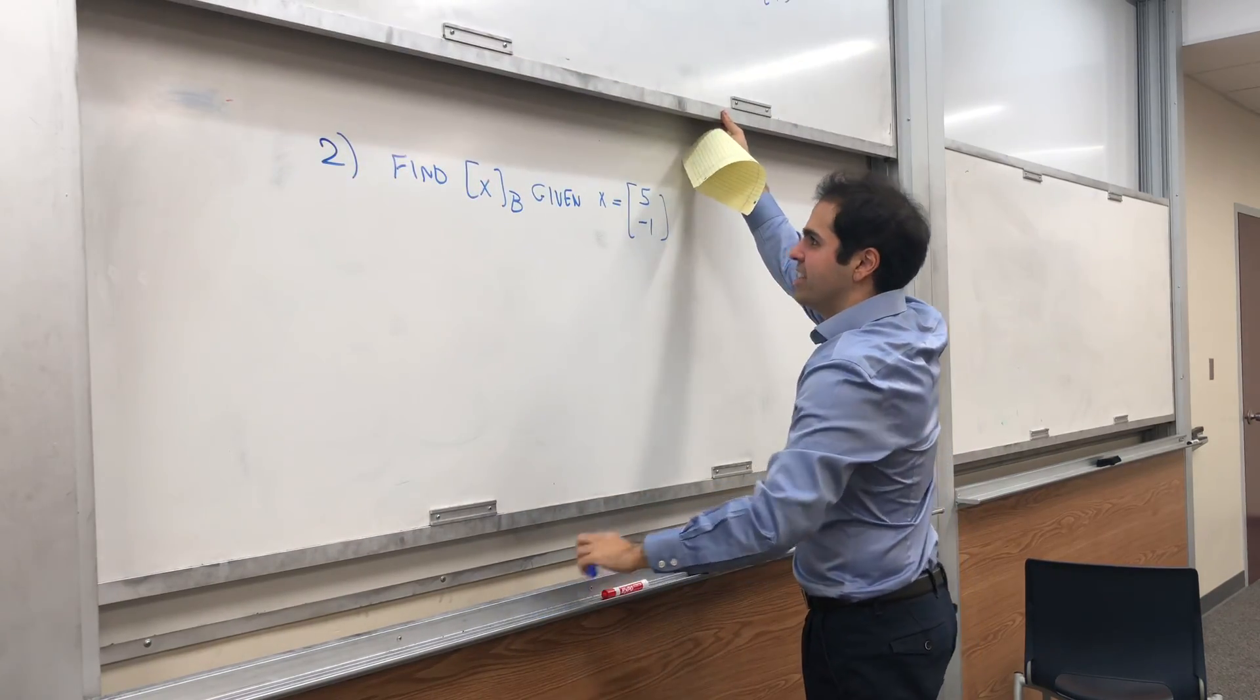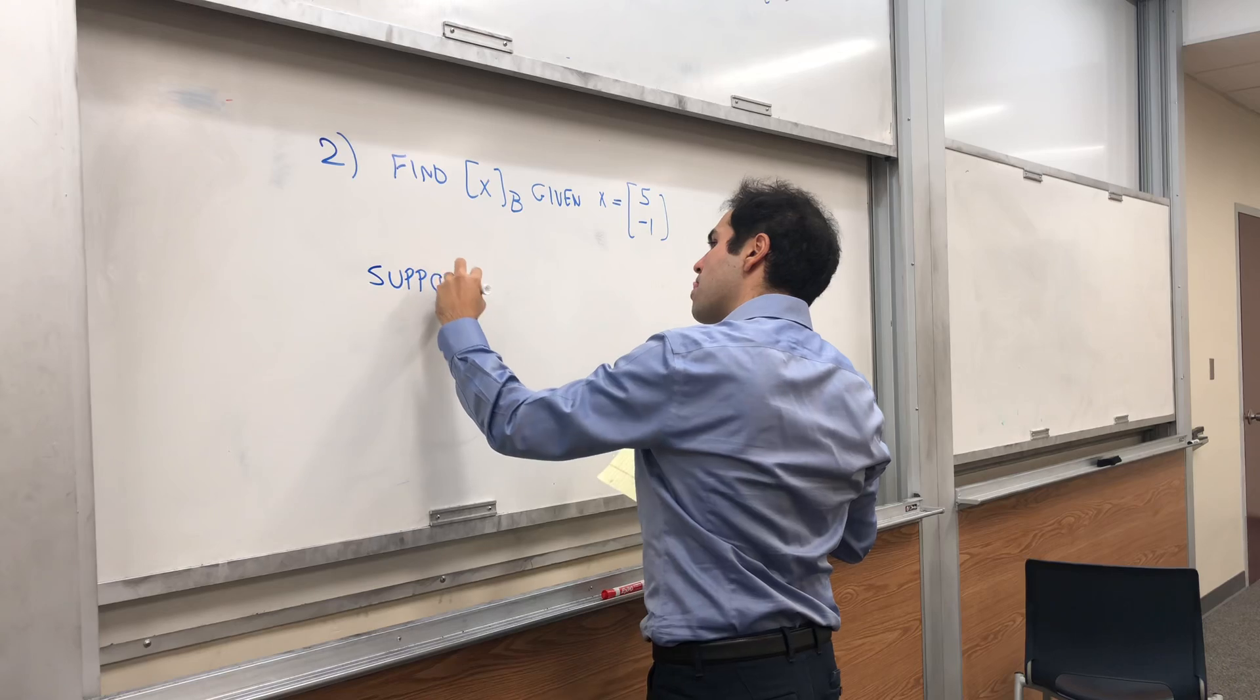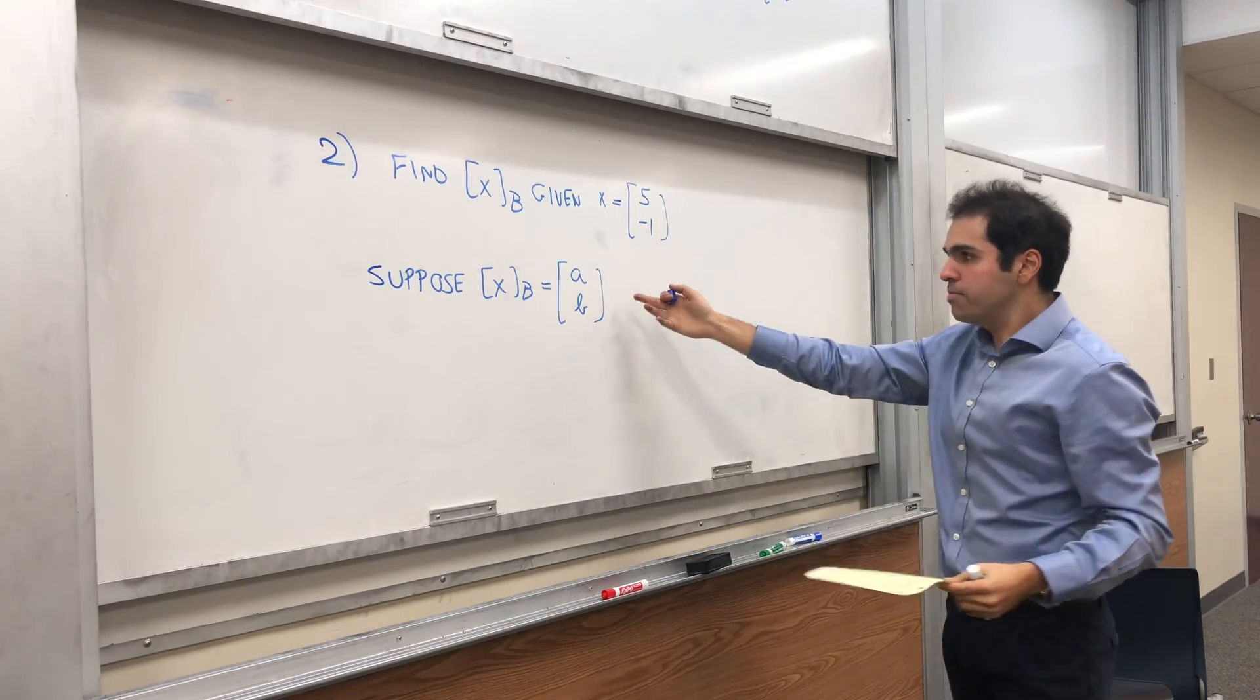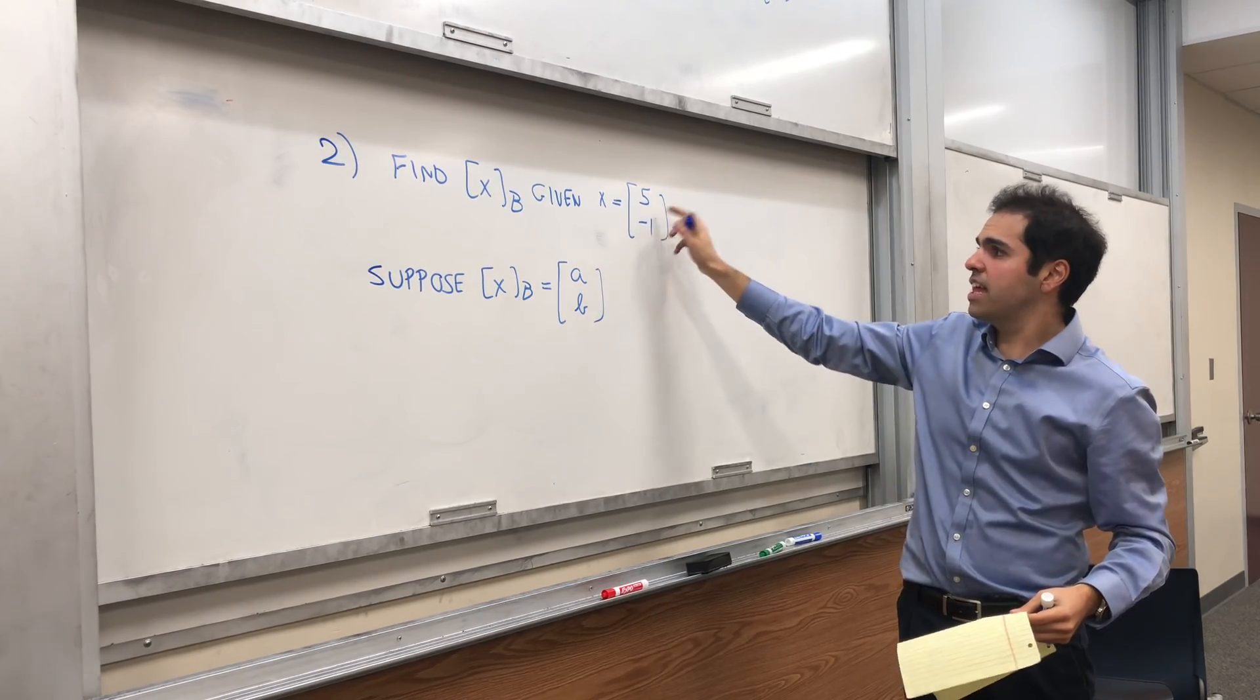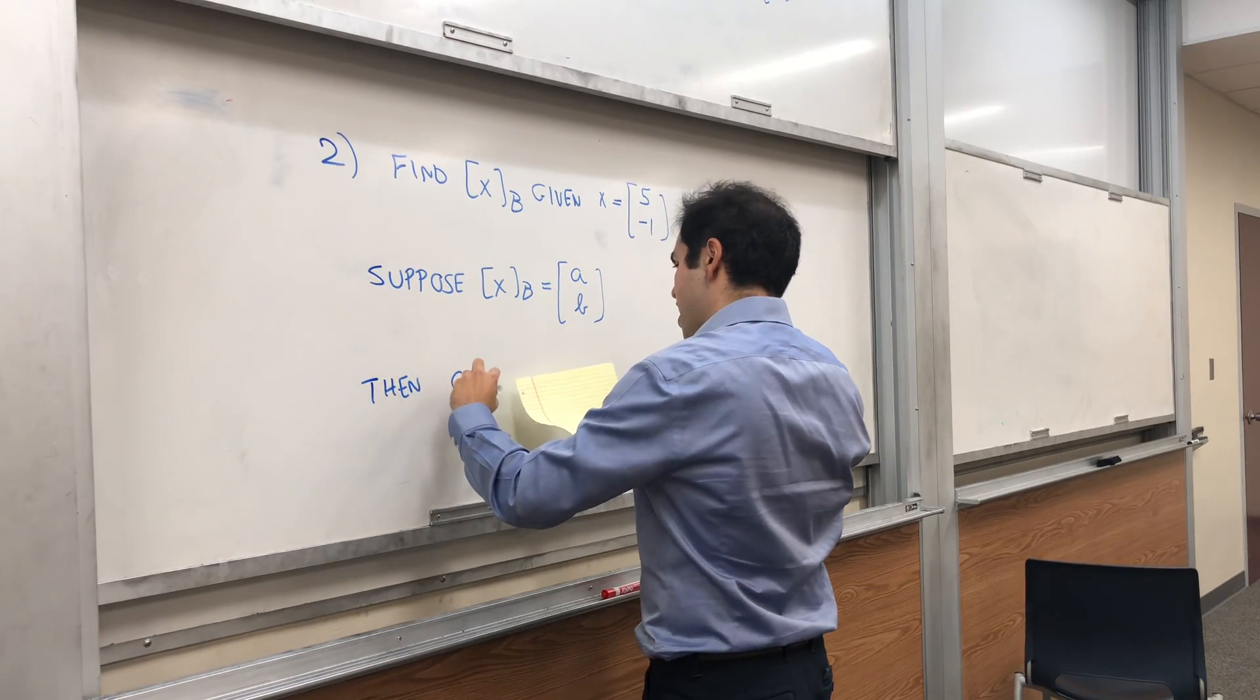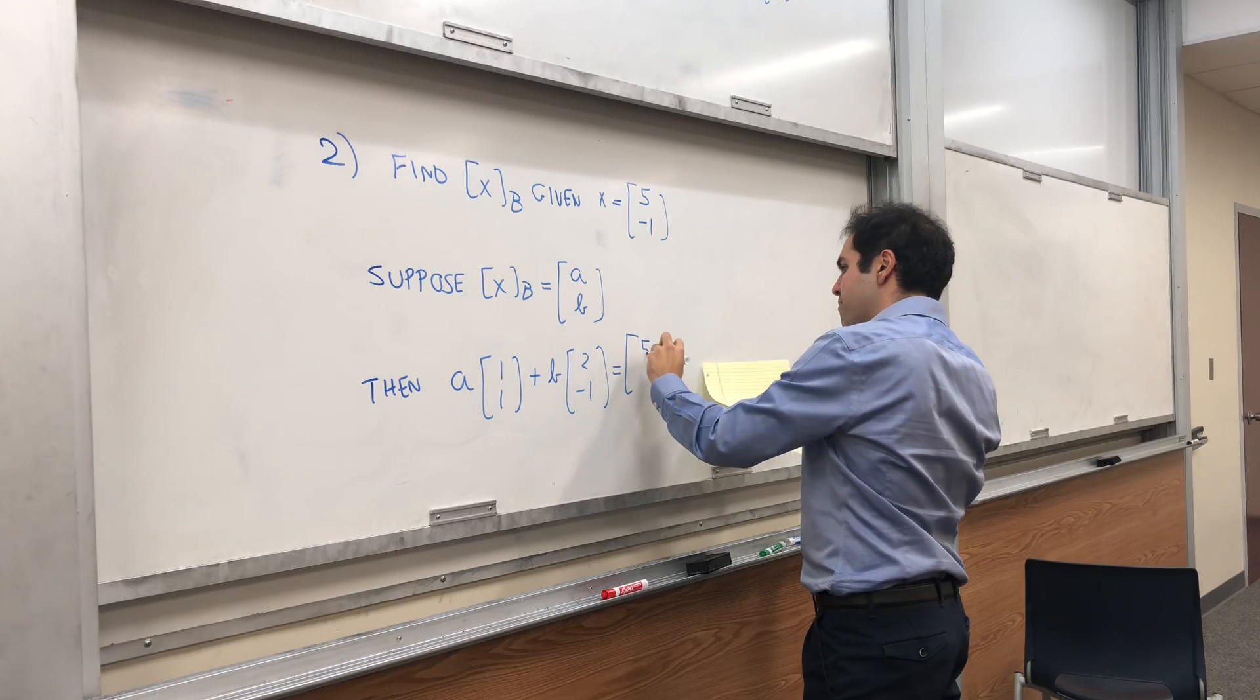But let's see how we can do this. So find this, given that, what this means. Suppose the barcode is just (a,b). This means you have to go a steps in the first direction and b steps in the second direction to get this vector. Then, a times (1,1) plus b times (2,-1) equals (5,-1).